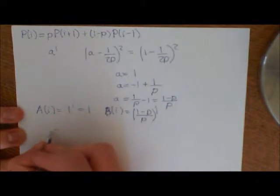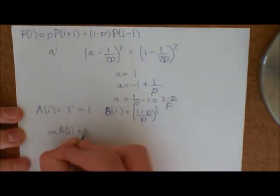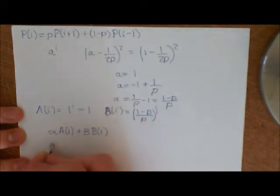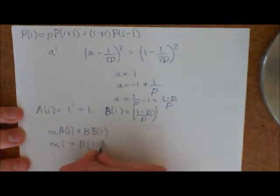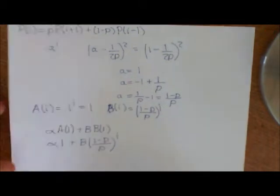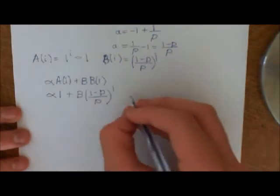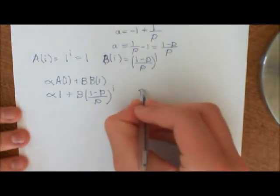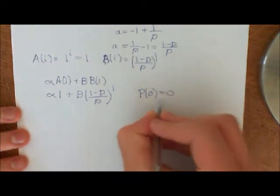And then any linear combination is also a solution, so α*A(i) + β*B(i) is also a solution, so that is equal to α times 1, which is all 1 to the i, but that doesn't matter, plus β(1-P)/P to the i. So now we're looking good. Now we're looking just like in differential equations, where all we need to do is solve for α and β such that P(0) is equal to 0 and P(N) is equal to 1.